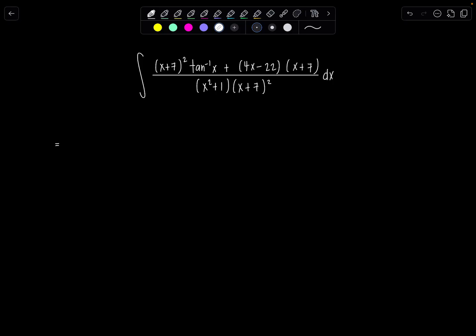I'm doing that because I could factor out x plus 7 from the numerator if I wanted, but since this has x plus 7 squared, I'd much rather just keep this first term over the denominator separately and be able to cancel a lot. And I'm so excited.